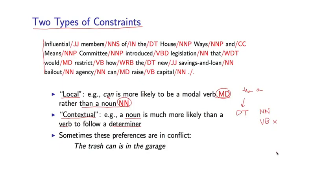We'll have to balance these two types of constraints when building tagging models, and these preferences are sometimes in conflict. Consider the sentence 'the trash can is in the garage' — 'can' has a local preference to be a modal verb, but it's clearly a noun in this context, because the surrounding syntactic structure dictates that it must be a noun. So we have two sources of constraints, local versus contextual, and we can build a model that balances both.